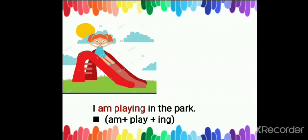Let's see the next sentence. I am playing in the park. Dear students, with 'I' we will always use 'am' plus root verb, that is 'play,' plus -ing in the present continuous tense.